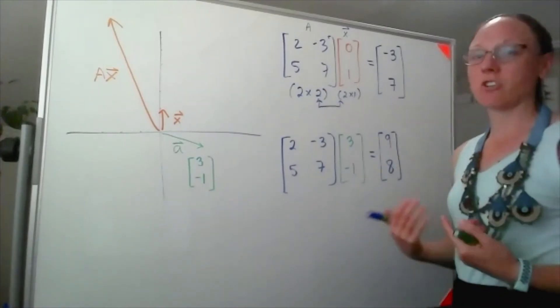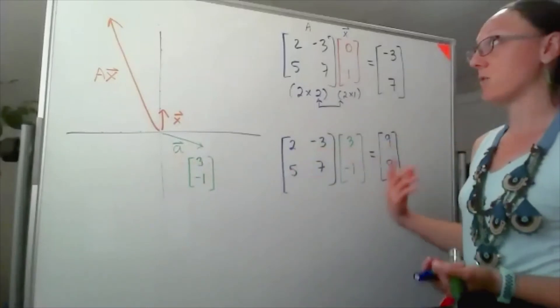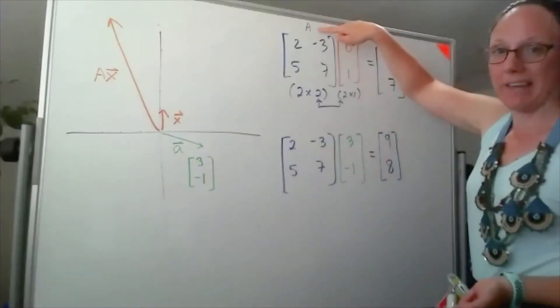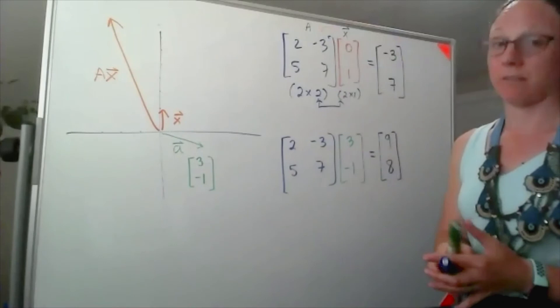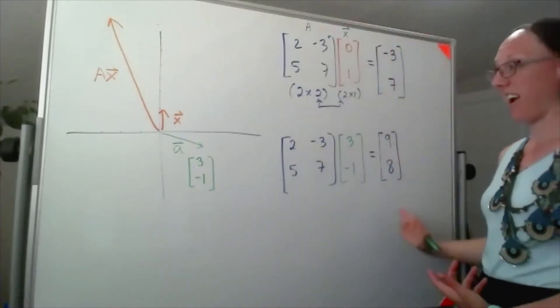So I say the image of A as a vector under the transformation matrix, big A, sorry I should have chosen different letters there, is the vector 9, 8.